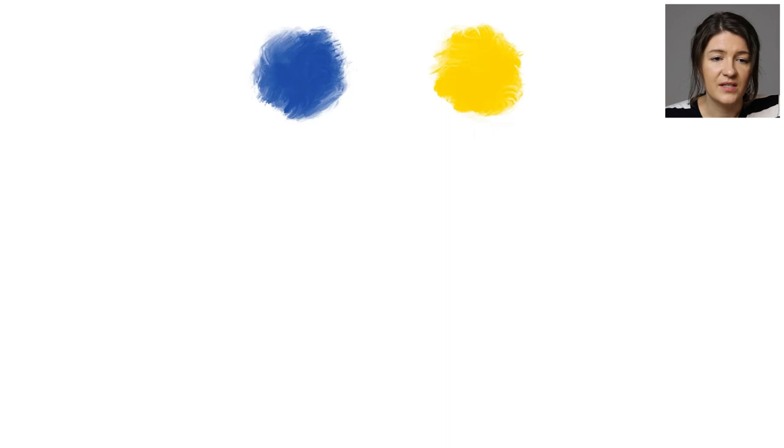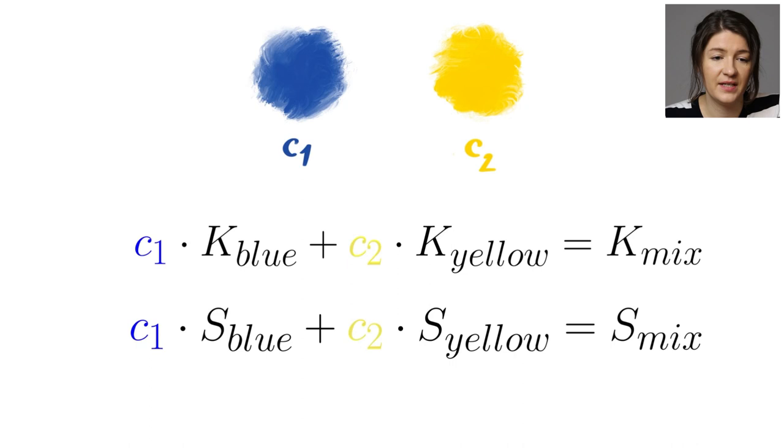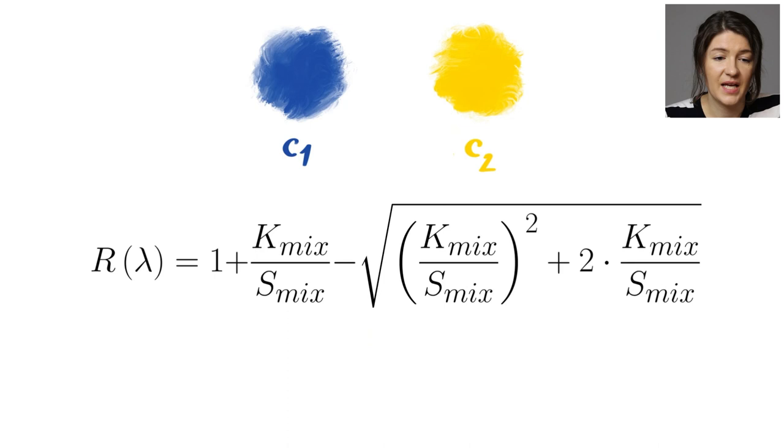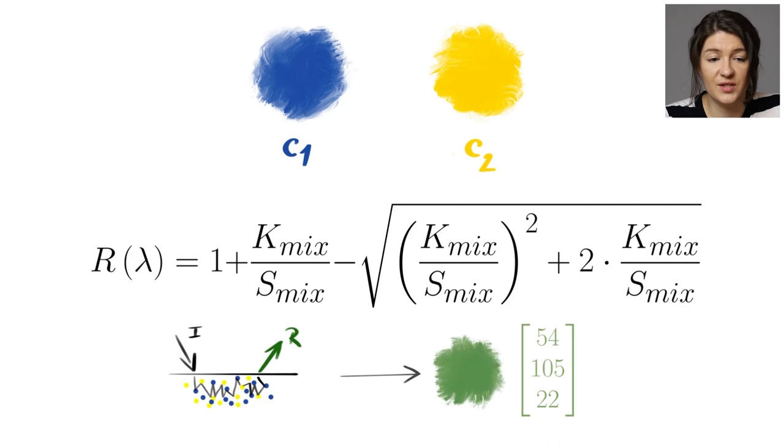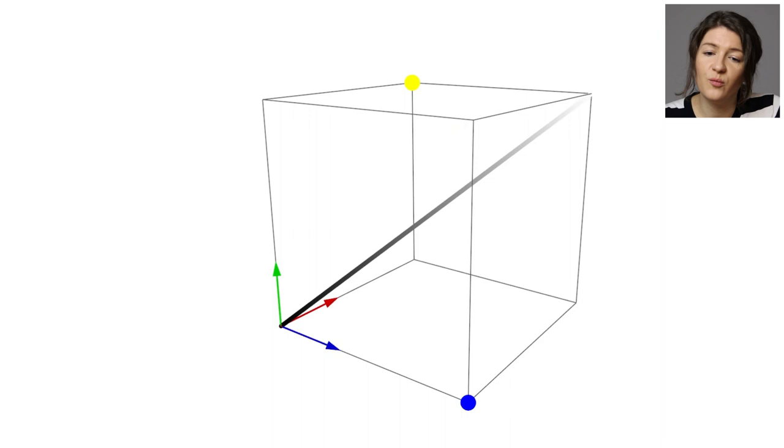So what if we want to mix two colors together? We take the concentration of each of the pigments and make a linear combination of their absorption and scattering coefficients. That way we get absorption and scatter of the final mixture, and we run it through the Kubelka-Munk formula. As a result, we get this reflectance spectrum of the mixture and we shine an illumination light on it and then we can convert it to RGB and display it on screen.